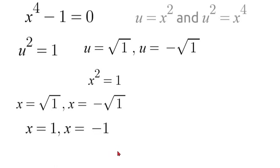So those are two of our answers and we will have two more. So let's solve for u is equal to negative square root of 1. We know that u is x squared again, so we'll have x squared is equal to negative 1. And now we will square both sides again, so x will be equal to square root of negative 1 and x will be equal to negative square root of negative 1.